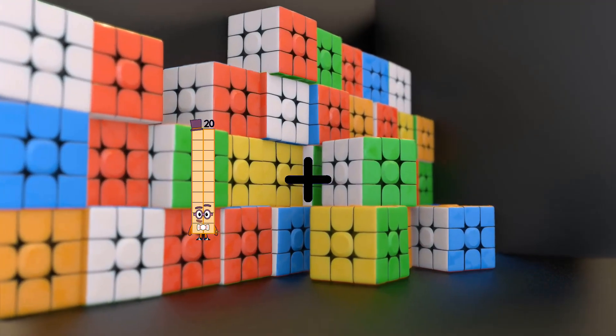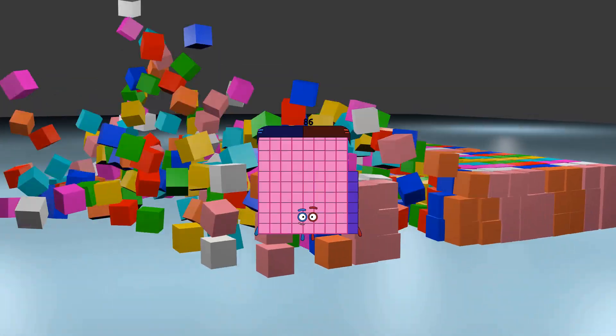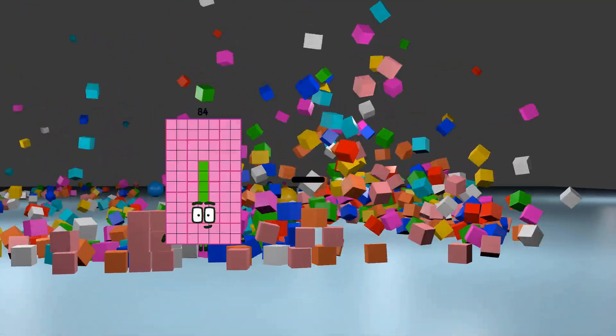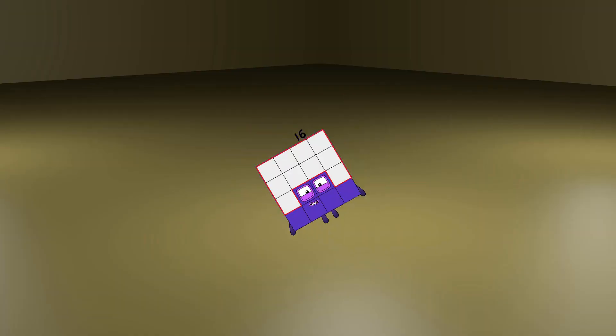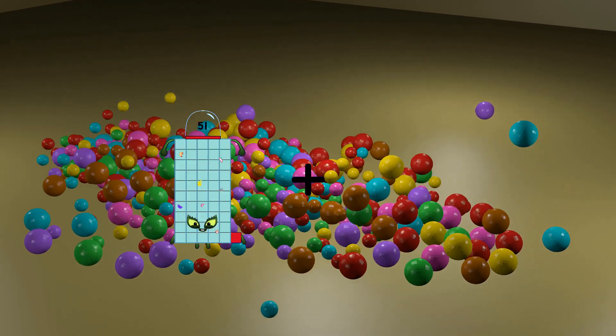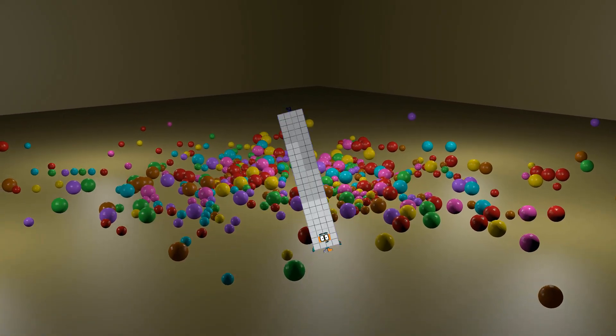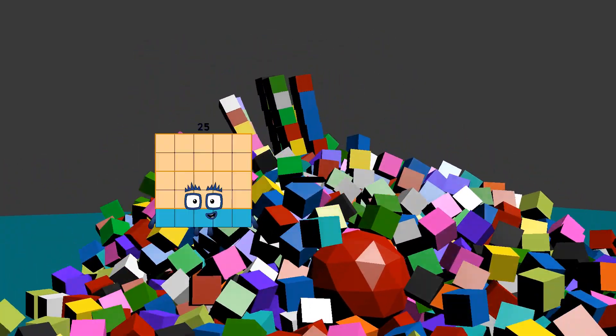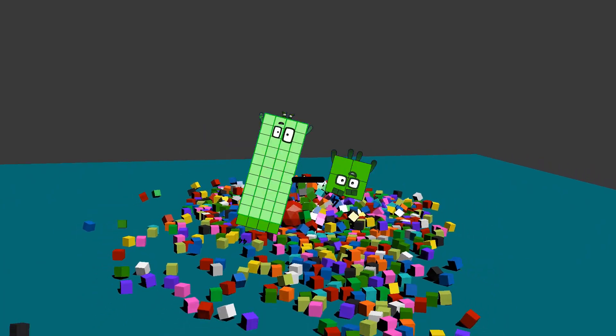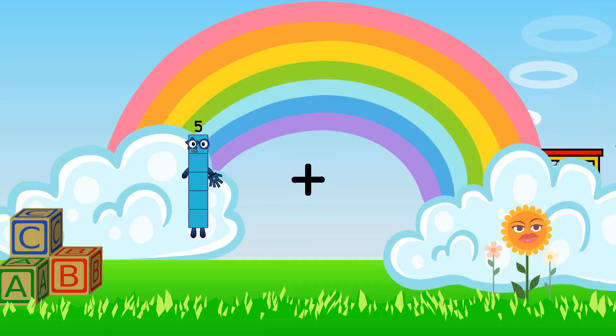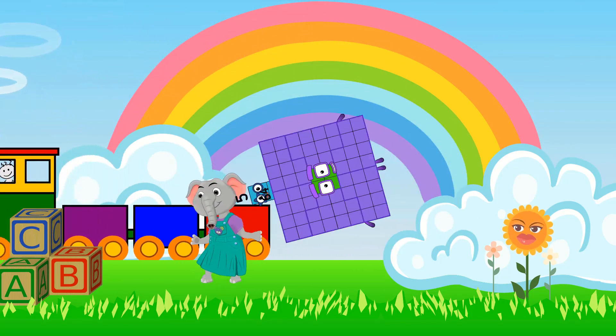20 plus 66 equals 86. 34 minus 18 equals 16. 20 plus 72 equals 92. 44 minus 4 equals 40. 5 plus 64 equals 69.